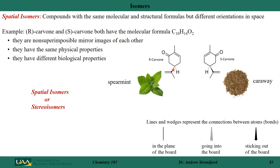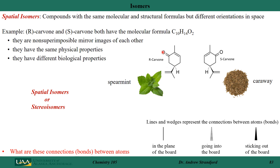Notice we've drawn wedges and dashed lines here. In addition to straight lines — which indicate atoms in the plane of the board — we can represent atoms going out of the board or into the board using dashed lines or darkened wedges. This is another way to represent molecular formulas in three dimensions. The lines connecting atoms — including double lines between oxygen and a carbon atom — represent bonds, which we'll discuss in the next section.